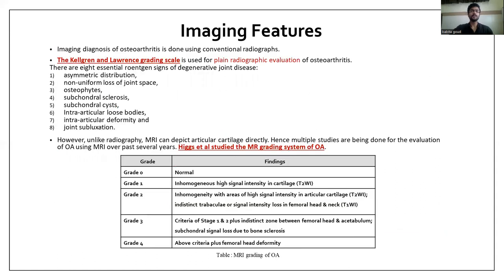For imaging features, on plain X-ray radiograph, we use the Kellgren and Lawrence grading scale wherein we can see eight essential points such as asymmetric distribution, non-uniform loss of joint space, osteophytes, subchondral sclerosis, subchondral cysts, intra-articular loose bodies, intra-articular deformity, and joint subluxation. So we can see all of these on X-ray.